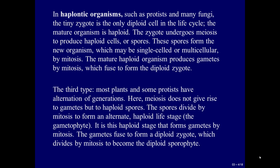The third type: most plants and some protists have alternation of generations. Here, meiosis does not give rise to gametes, but to haploid spores. The spores divide by mitosis to form an alternate haploid life stage, the gametophyte. It is the haploid stage that forms gametes by mitosis. The gametes fuse to form a diploid zygote, which divides by mitosis to become the diploid sporophyte.